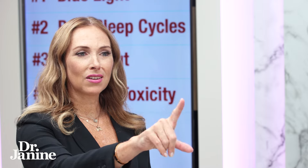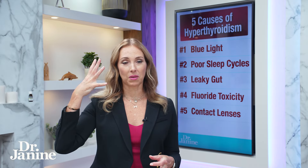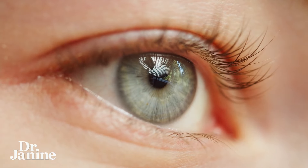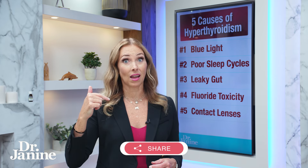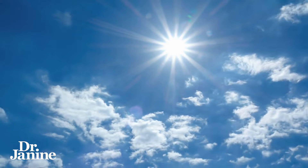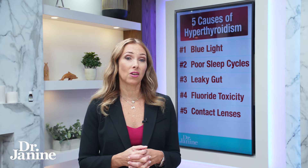Number five, the last cause of hyperthyroidism we'll talk about today, believe it or not, is your contact lenses. If you are a contact lens wearer, did you know that the connection of natural full-spectrum light from the sun coming into your eyes helps to signal your thyroid gland, your leptin levels, and your melatonin? When you cover your eyeballs with contact lenses, they're not getting that oxygen or that proper UV signal of full-spectrum sunlight, offsetting the proper messaging between your brain, your eyes, and your thyroid gland — causing circadian disruption that could be a big factor in your hyperthyroidism.